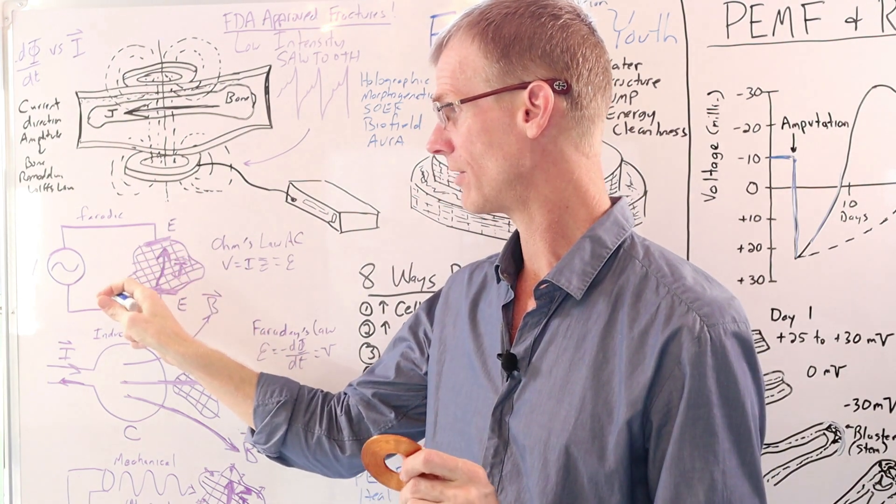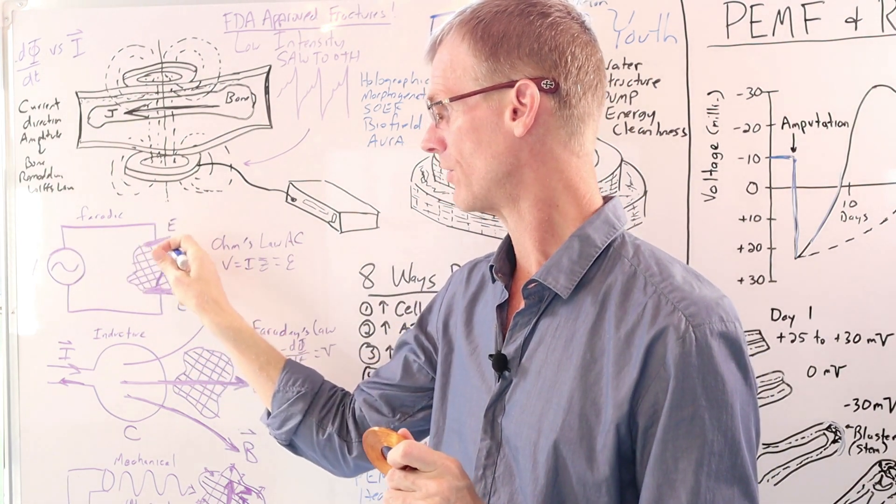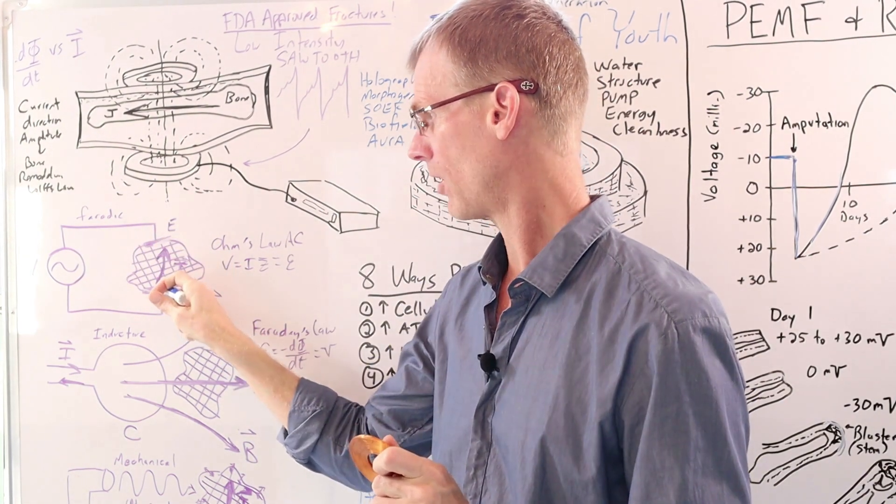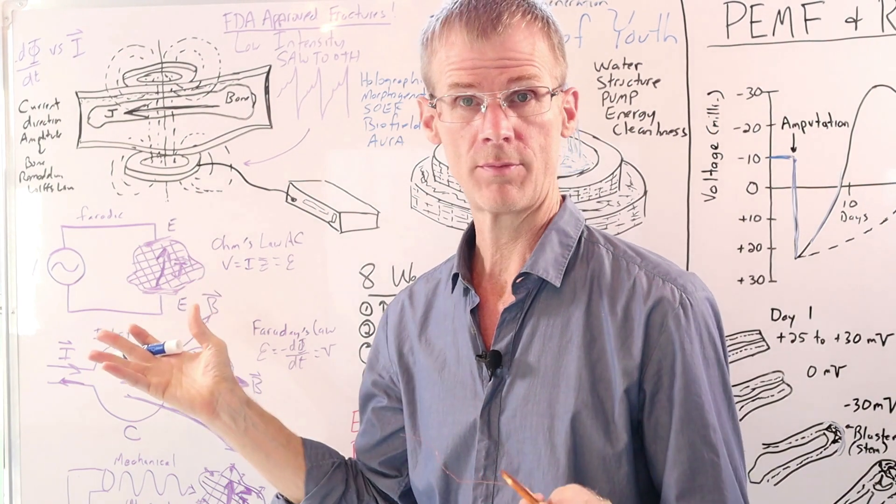And this little chart here kind of summarizes it. So here we have a voltage source, and this is kind of like you could say like tissue in the body. So when you add the voltage to the electrodes, a current is induced in the tissue, which will stimulate regeneration.